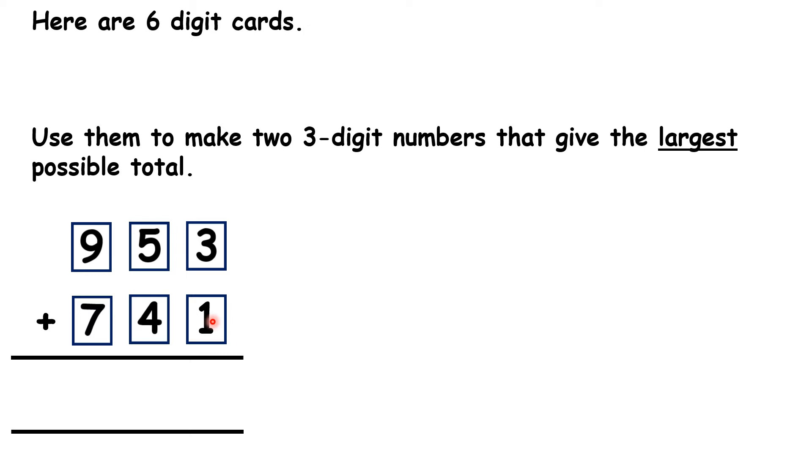So if we add the 2 numbers we've made, 3 plus 1 is 4, 5 plus 4 is 9, and 9 plus 7 is 16. So when we add 953 and 741, we get the largest possible total, which is 1,694.